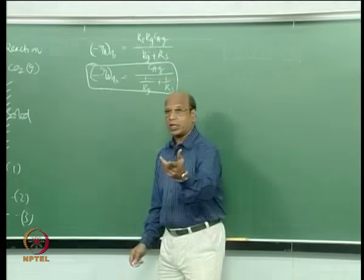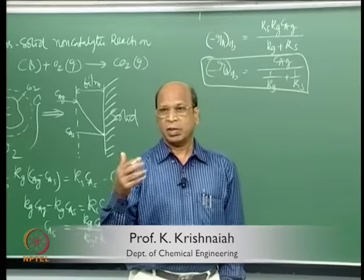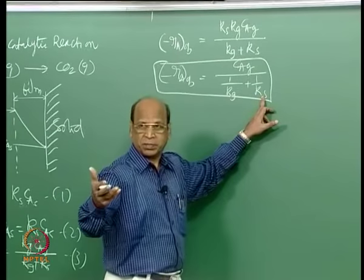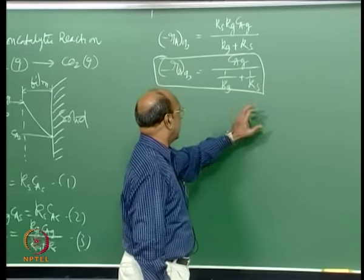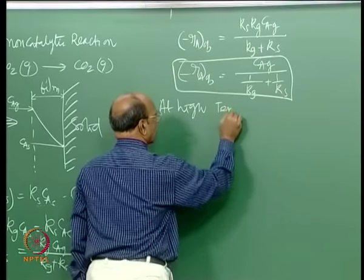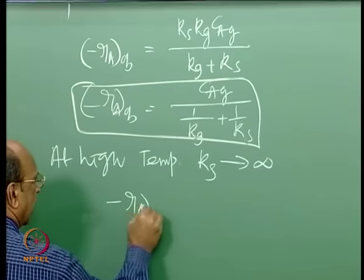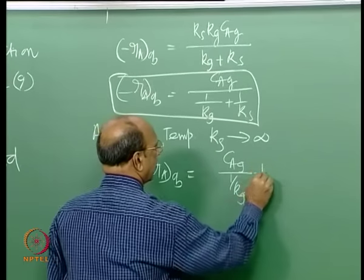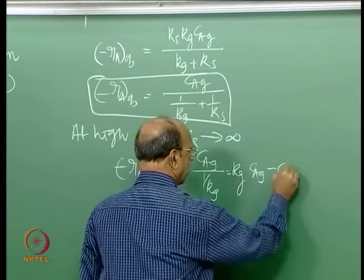Most combustion processes are mass transfer controlled because the temperatures are very high. At very high temperatures, KS is very, very large due to the Arrhenius equation — a small change in temperature creates a large rate constant. So at high temperatures, KS tends to infinity, and the observed rate becomes: minus Ra,observed equals KG times CAG, which is the mass transfer equation.